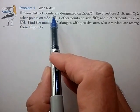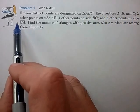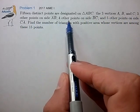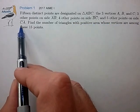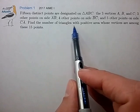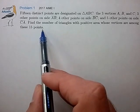15 distinct points are designated on triangle ABC: the three vertices A, B, and C; three other points on side AB; four other points on side BC; and five other points on side CA. Find the number of triangles with positive area whose vertices are among these 15 points.